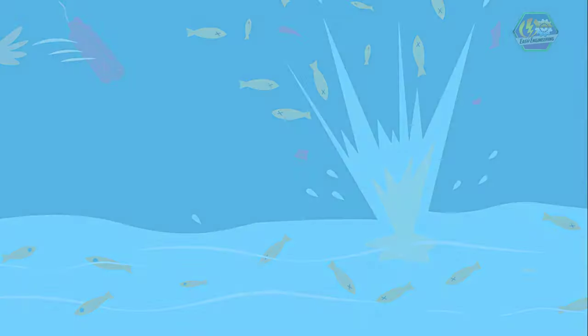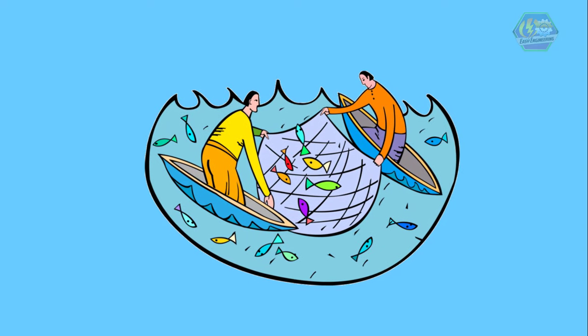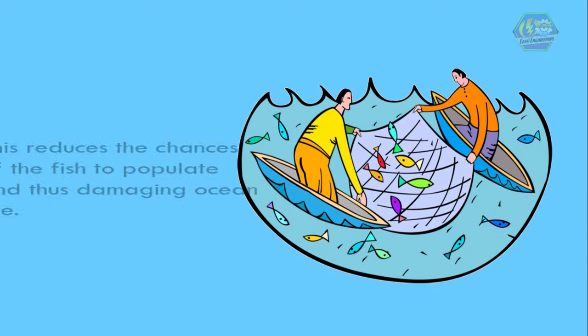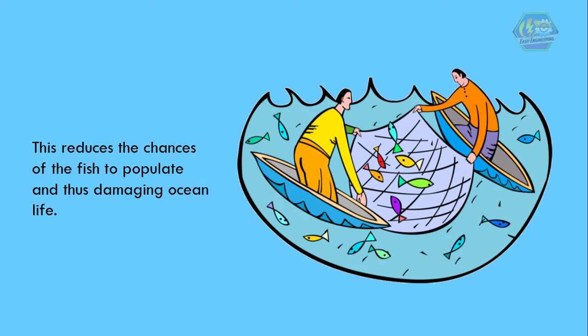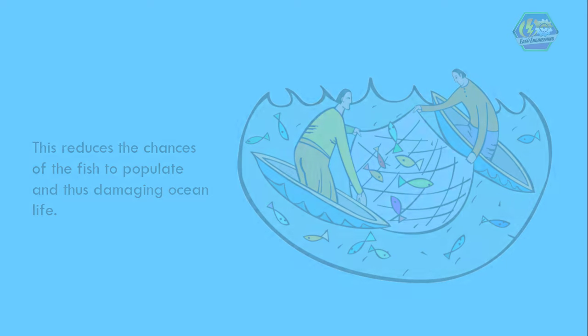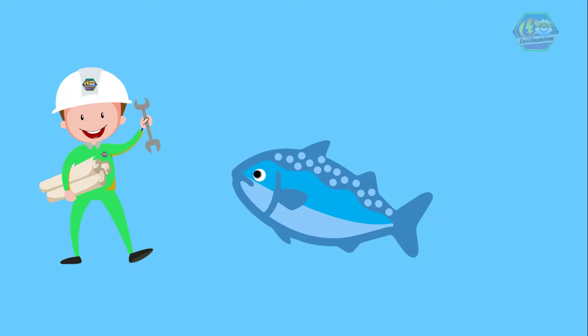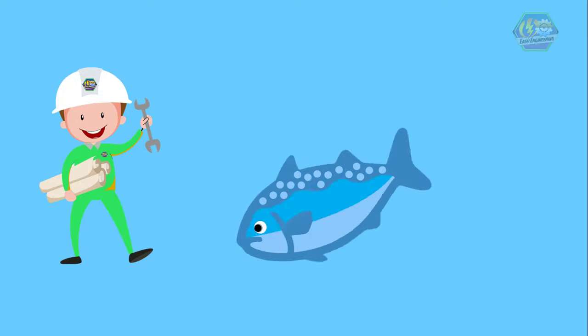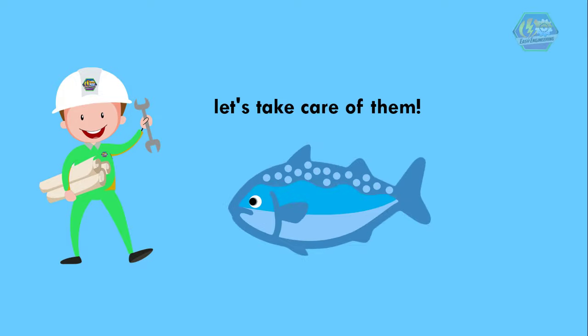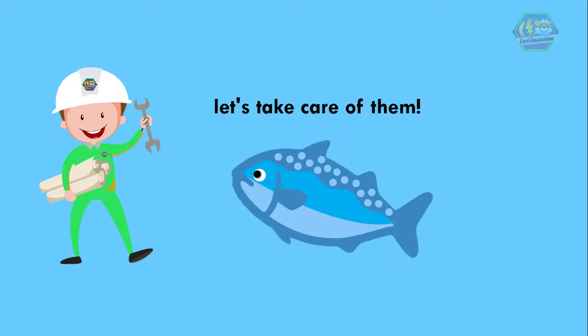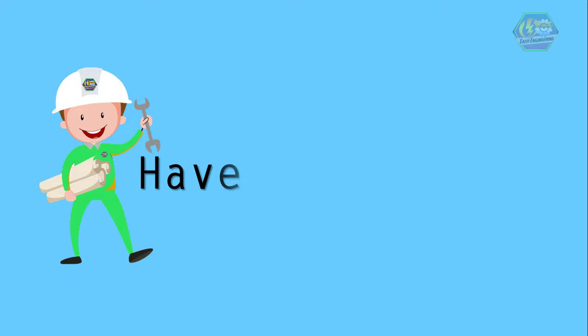A long time ago, lots of fishermen used illegal fishing methods, like the use of dynamite and very small-holed nets where younger fishes get caught or die in the process. This reduces the chance of fish to populate, damaging ocean life. So if you're fishing, be sure to catch only the big ones. Fishes are as important to us as other food sources — let's take care of them. That is all for now. I hope you learned something today. Once again, this is Easy Engineering. Have a nice day!